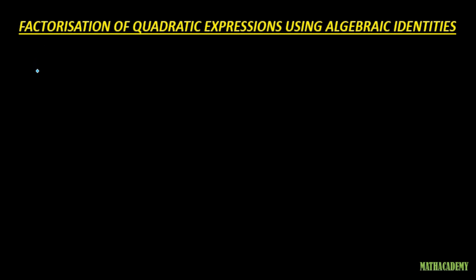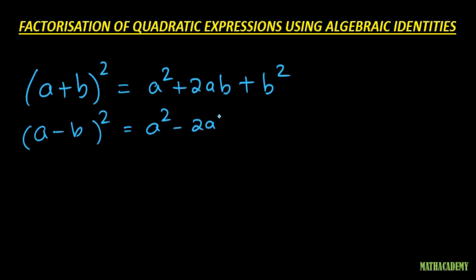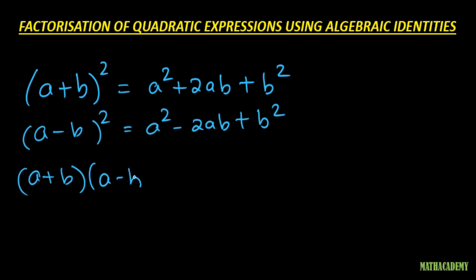The three different identities which we have learnt are: (a + b)² which is a² + 2ab + b²; (a - b)² which is a² - 2ab + b²; and the third identity is (a + b)(a - b), which is the difference of two squares, a² - b².